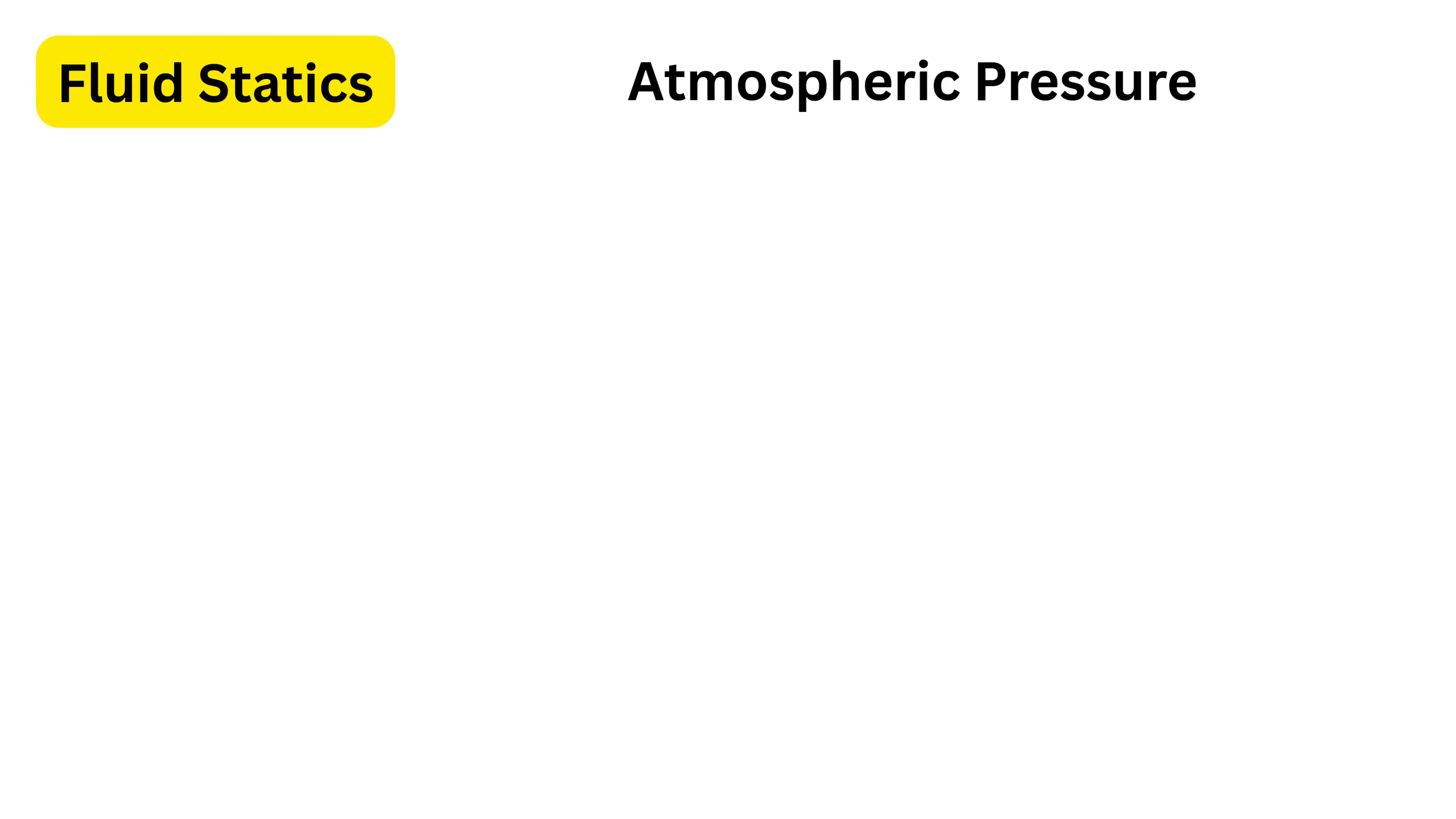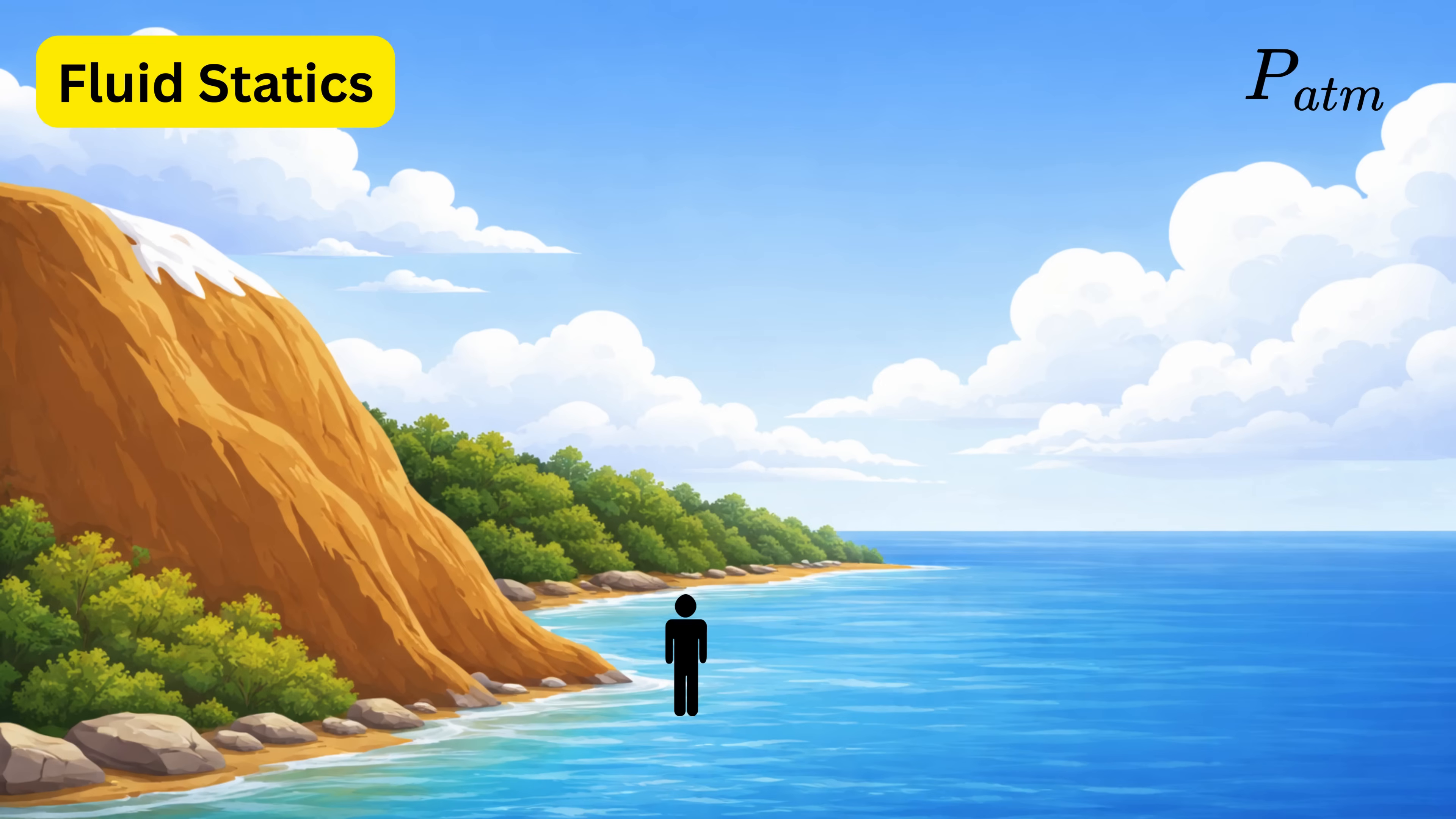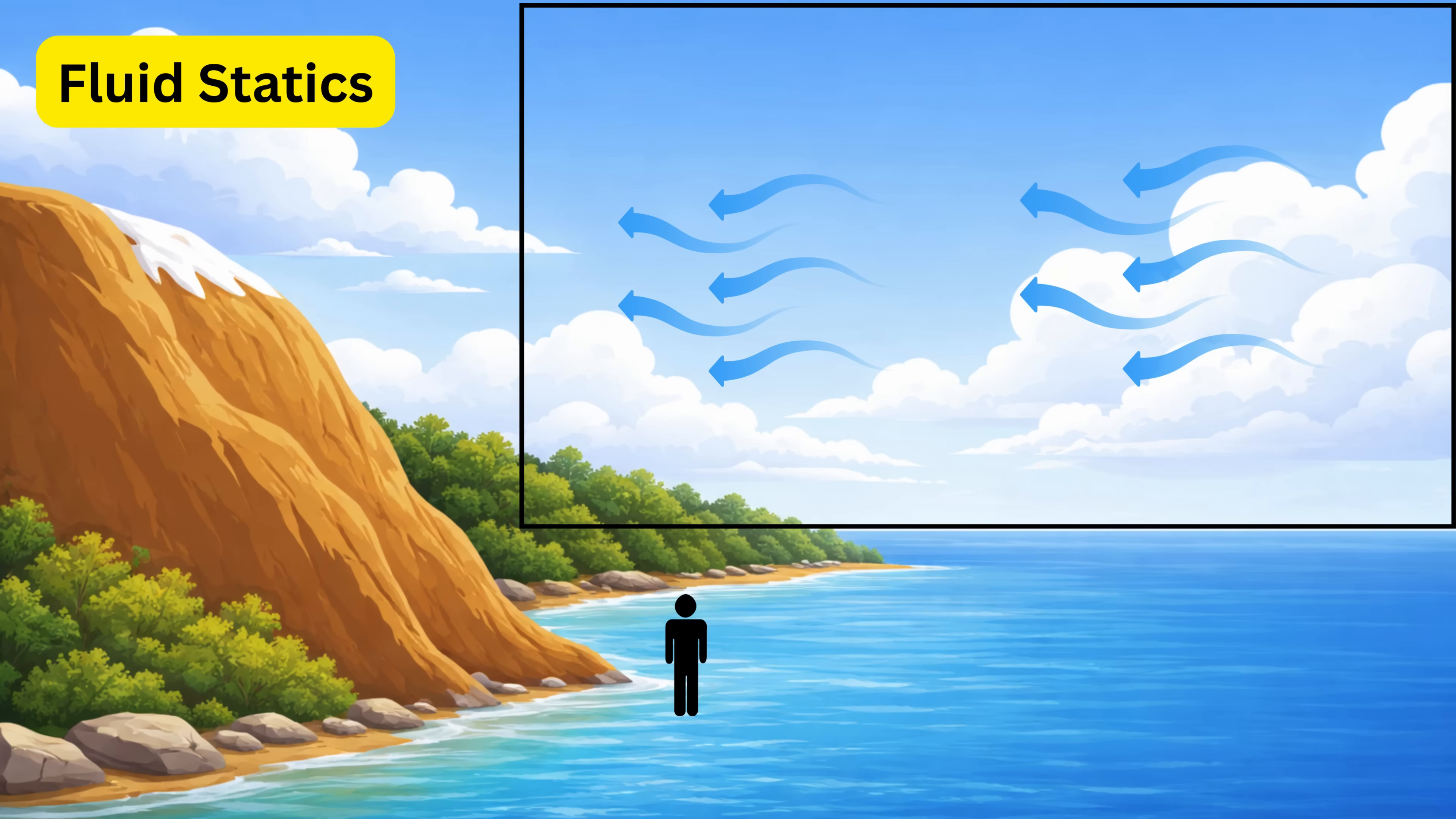Now let us introduce atmospheric pressure. We live at the bottom of a huge ocean of air called the atmosphere. Air has weight and because of that it exerts pressure on everything around us. This pressure is called atmospheric pressure.